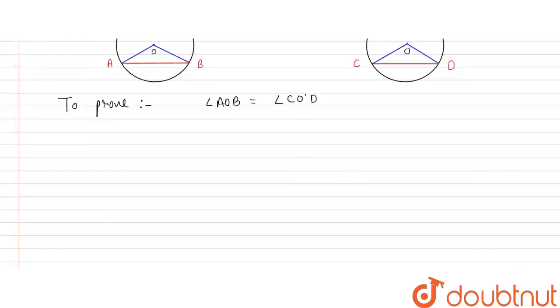And how to prove this? So here is the proof. First thing, AB is equal to CD. This is given in the problem.